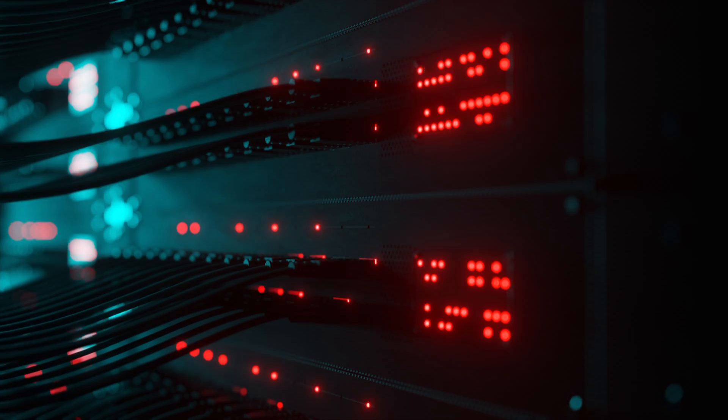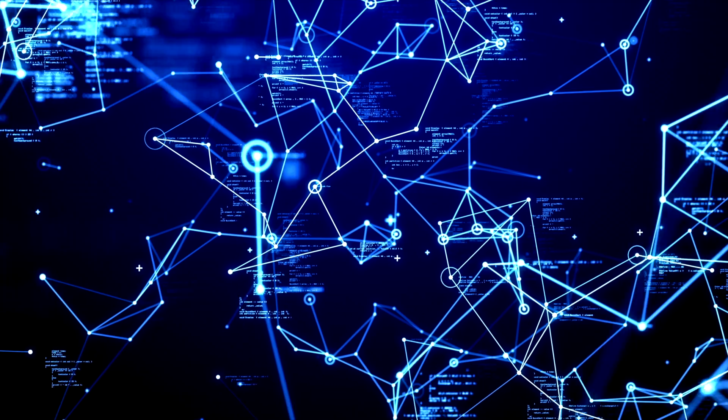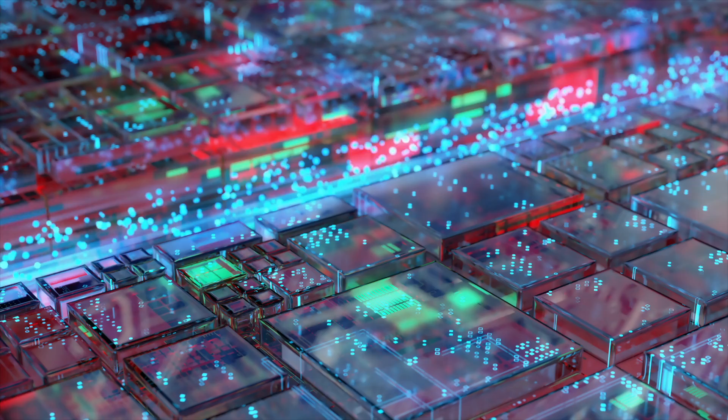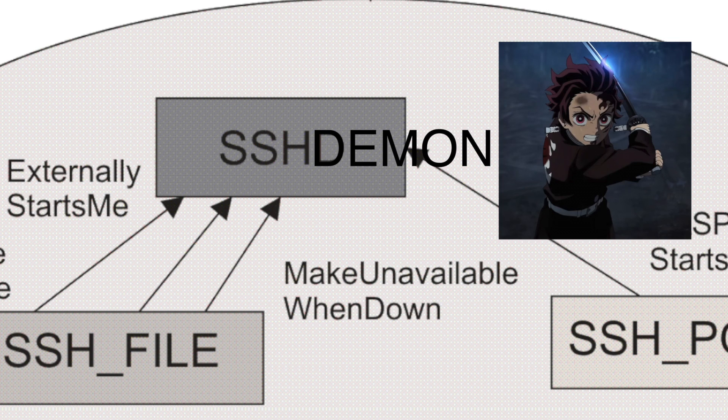How does the exploit work? XZ is a utility maintained by only one contributor, which is widely used across open source software for compressing and decompressing data streams. The XZ CLI is installed by default on almost all Linux distributions. Inside this library, there's the secure shell daemon or SSHD that is widely used — it's almost everywhere.